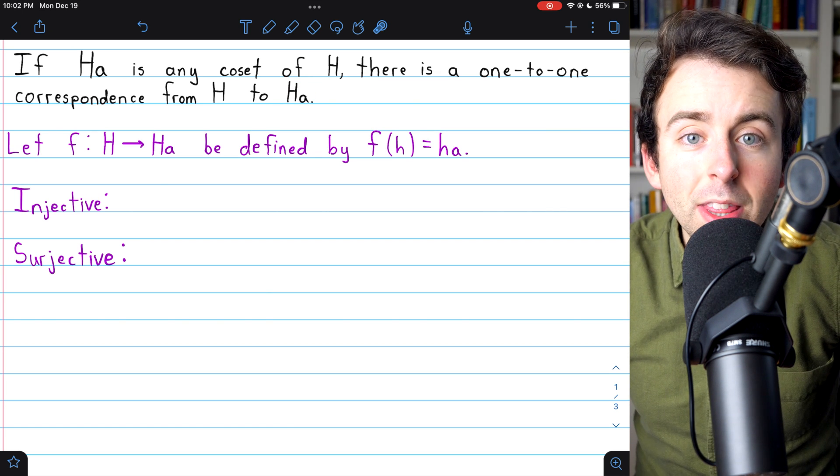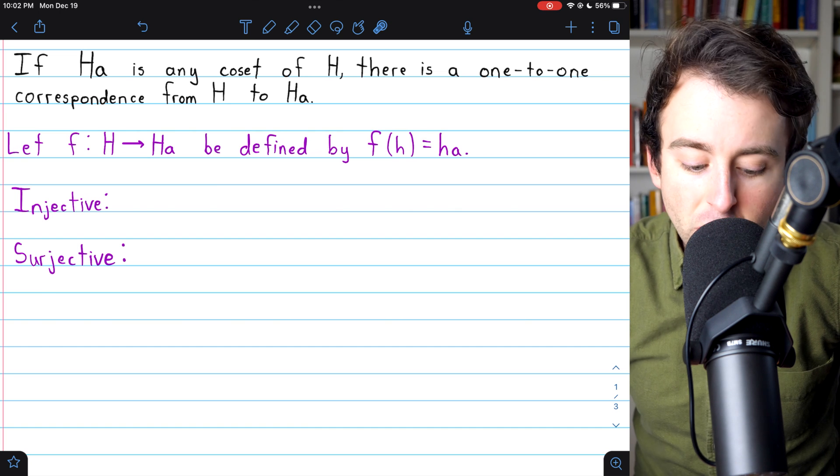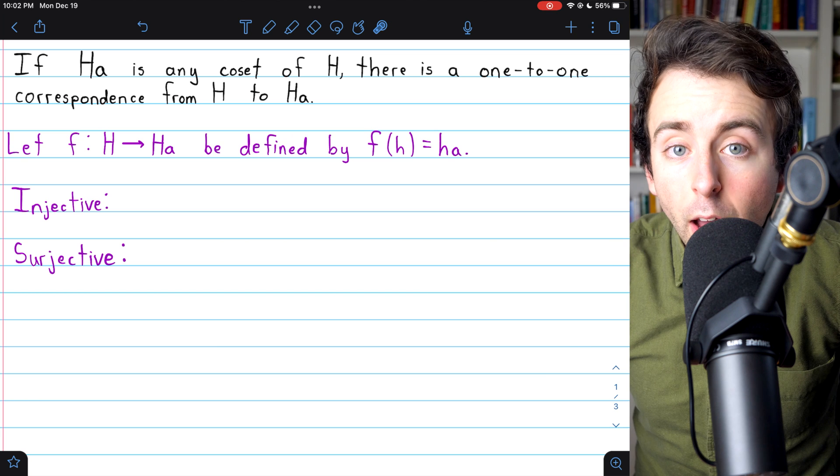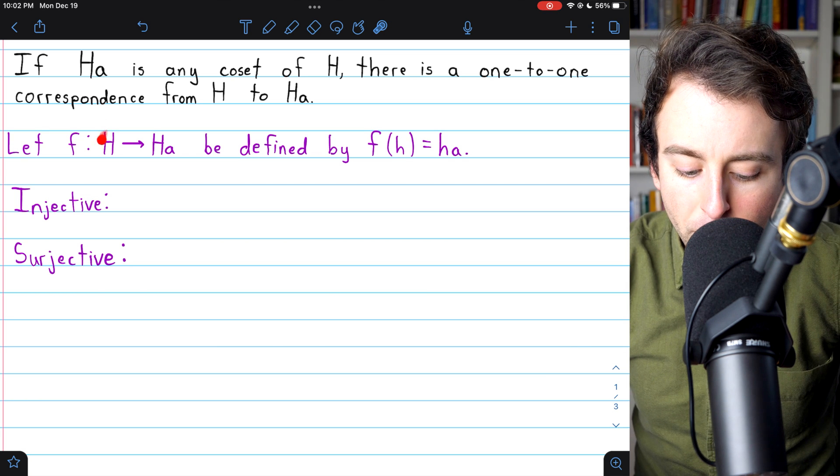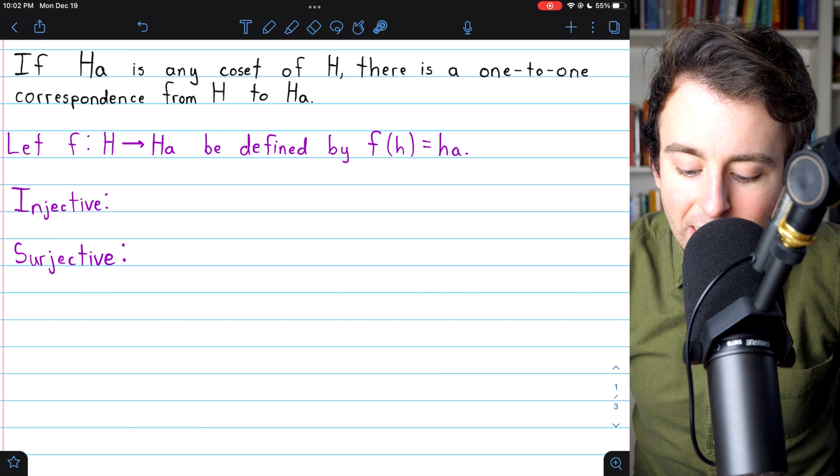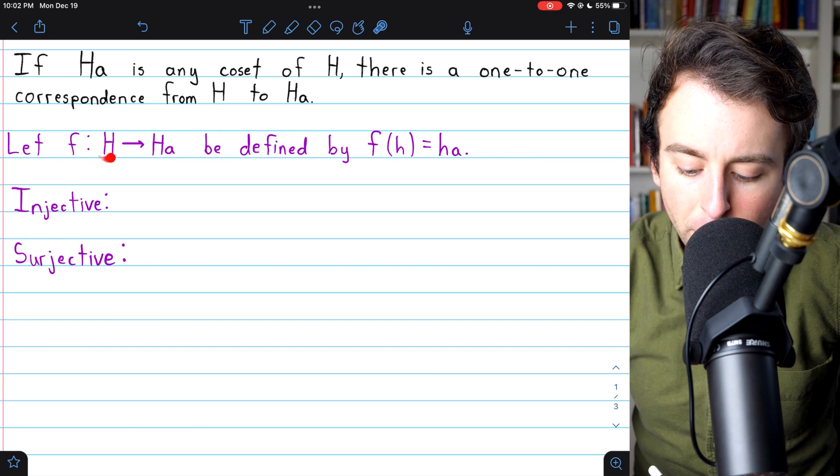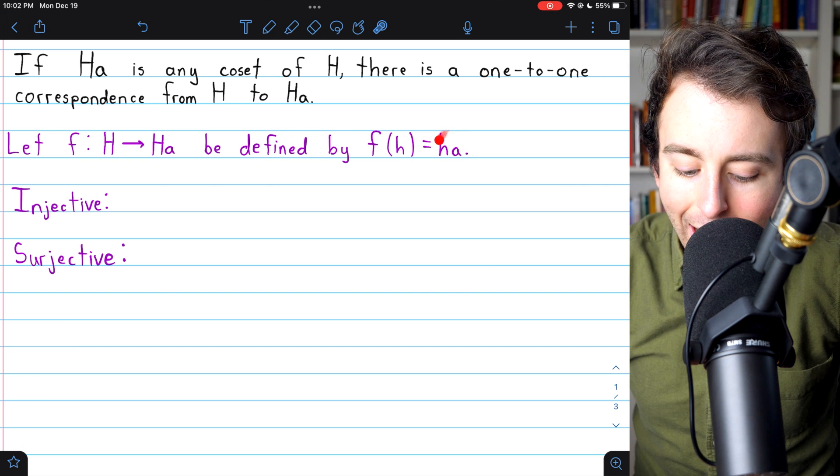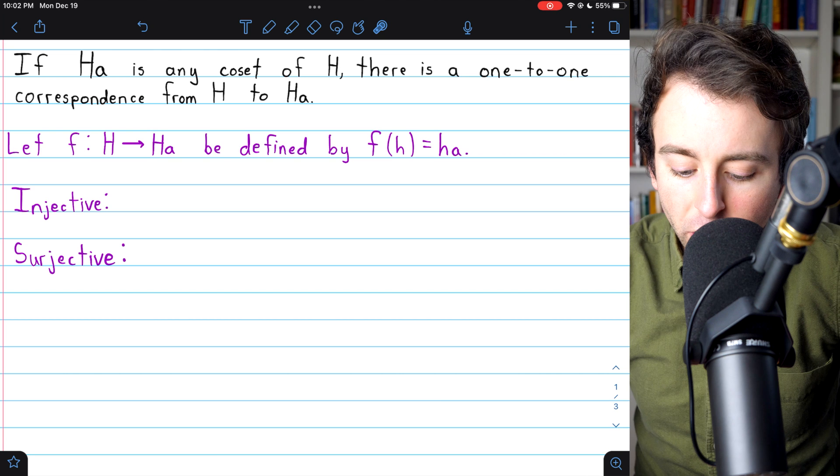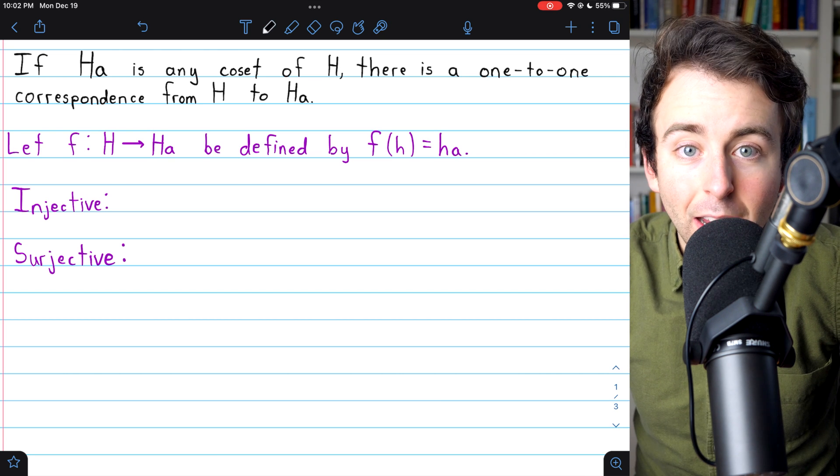To prove there is a one-to-one correspondence from the subgroup H to the coset HA, we need to find some function between them and prove that it is a bijection, that it is injective and surjective. The most obvious function from the subgroup H to the coset HA is this function F, which takes each h from the subgroup and just maps it to ha in the coset.